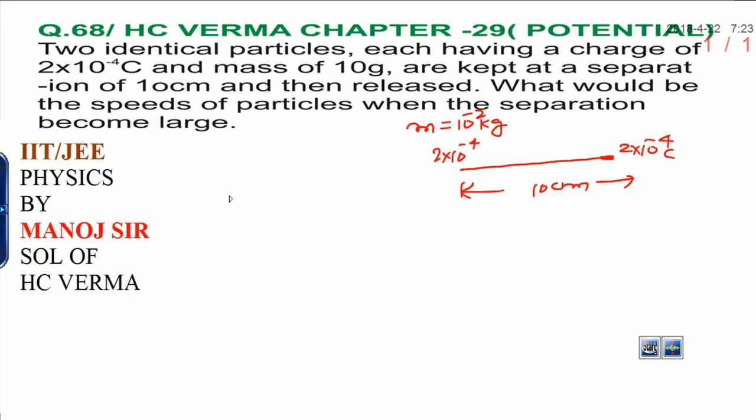Now, you need to calculate the speed. Here, if you release these charges from these points, it means initial velocity of both the charges you can consider 0. It means at the initial level, when you apply the law of conservation of energy, at the initial level,